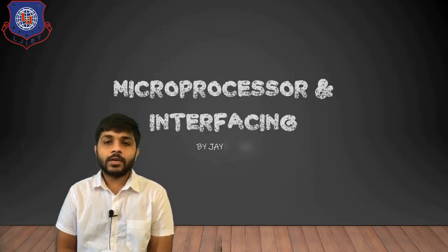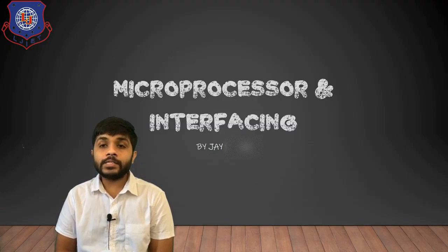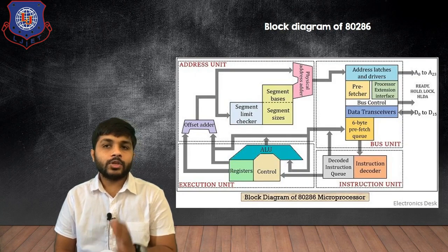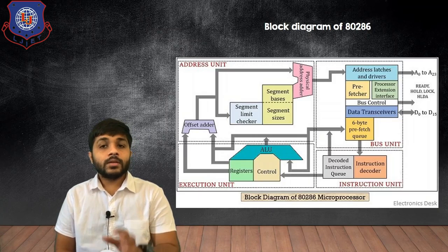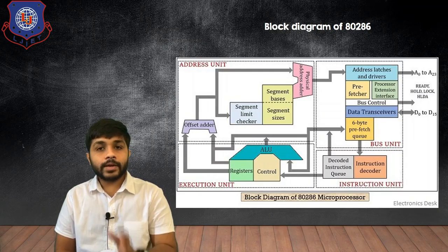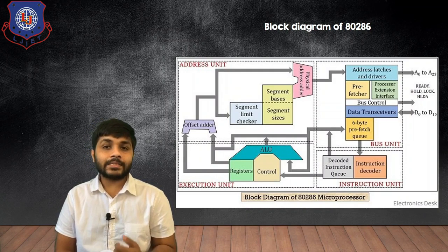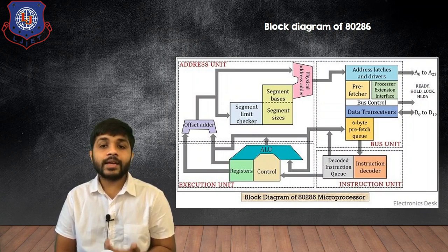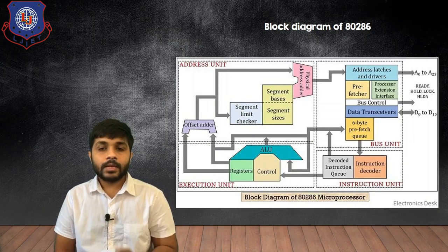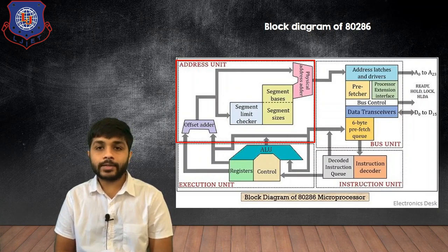Hi everyone, I am Jay and today we are going to see the block diagram of 80286 and 80386. You can see that on the screen this is the block diagram of 80286. The block diagram of the 80286 is divided into four parts: there is an address unit, a bus unit, an instruction unit, and the execution unit. Let's see all these parts one by one. The first part is the address unit.